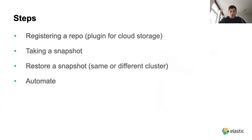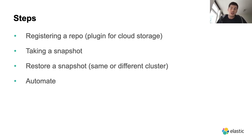The steps are: first, register a repository. For file system storage, we define it in the config file. For cloud storage, you need the appropriate plugin installed — but only if you're maintaining your cluster yourself. If you're using Elasticsearch as a service, plugins are automatically installed and the snapshot lifecycle management policy is implemented for you. If you manage your own cluster, you have full control of when and how you do this.